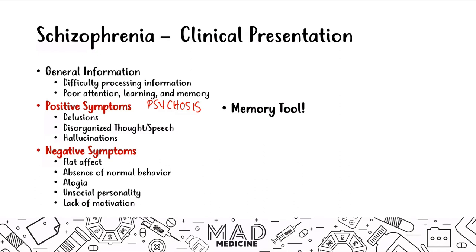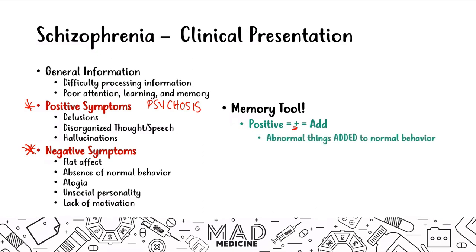A memory tool for these two types of symptoms: positive symptoms — think of a plus sign, meaning addition. Something abnormal is being added to a person's normal behavior, such as delusions, disorganized thought and speech, and hallucinations. Negative symptoms — think of a negative sign, meaning subtraction. Normal things are being subtracted from normal behavior, leaving patients with flat affect, poor speech, social withdrawal, and lack of motivation.